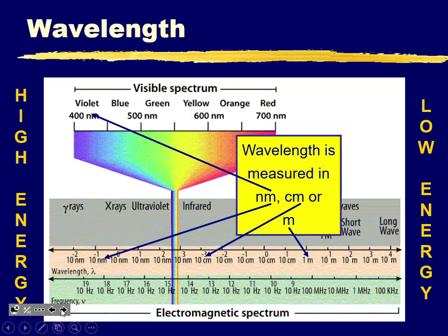For wavelengths, you'll see them measured in nanometers, centimeters, or meters. We're going to be focused on the nanometer range because visible light is expressed in nanometers. We'll be calculating with that particular prefix — that's why we needed to know it from unit one.